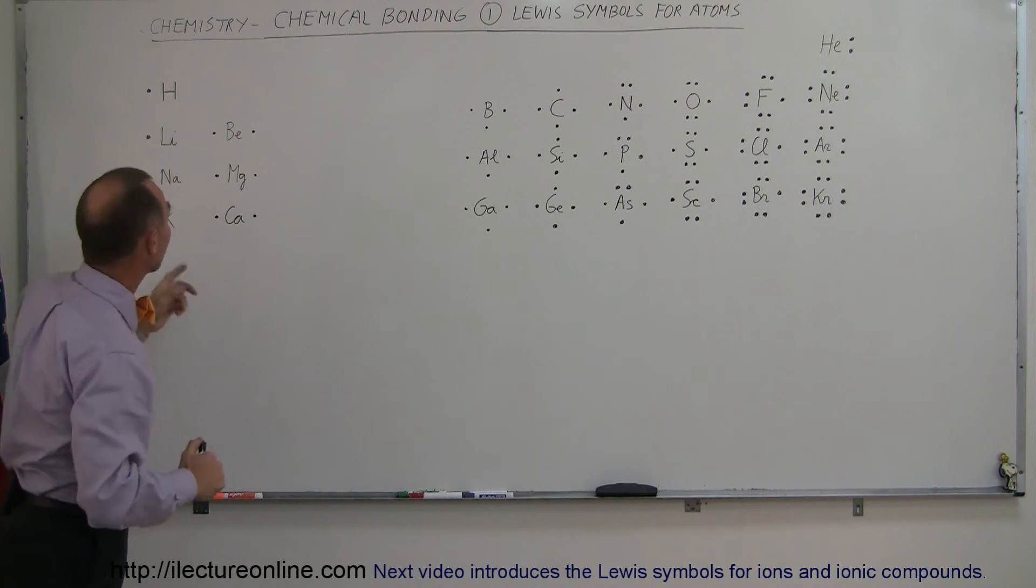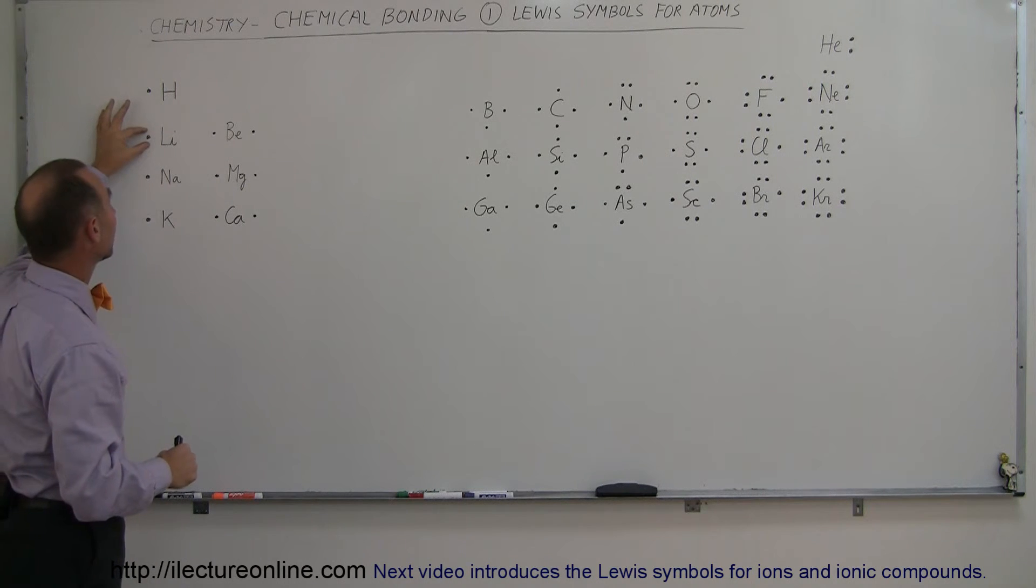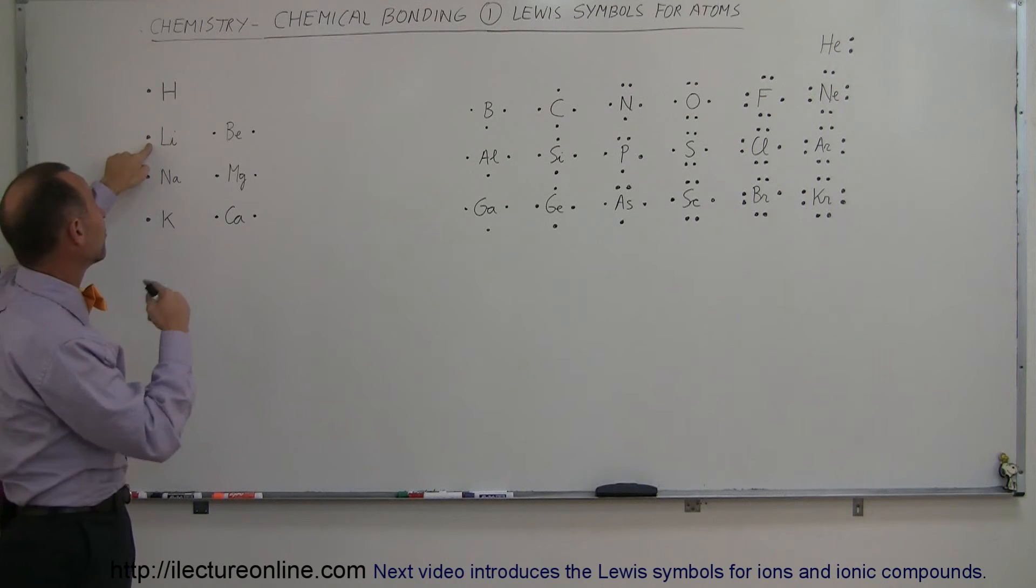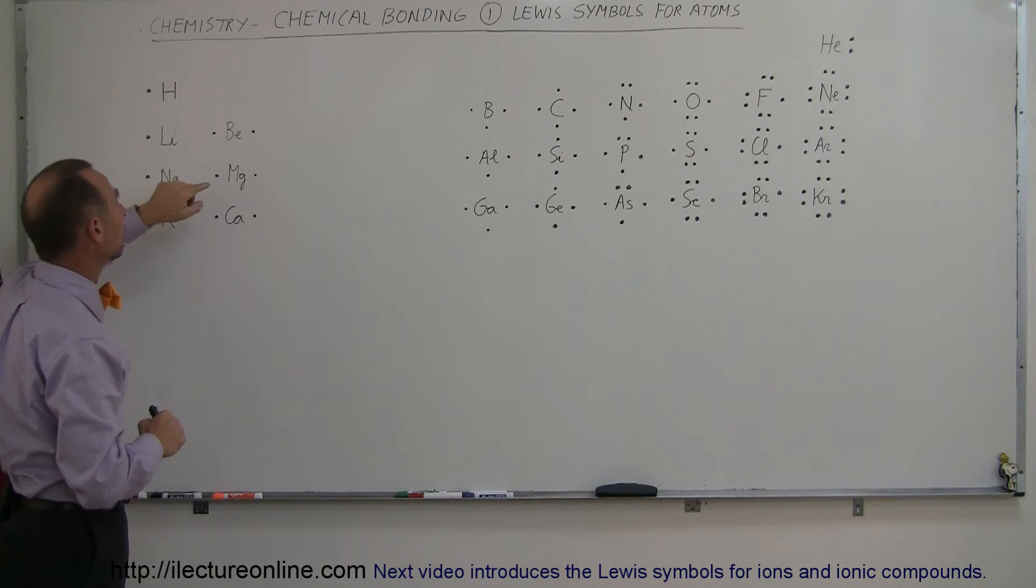For lithium, we know lithium has three electrons but we ignore the inner two. We only indicate the one in the second energy level. So this is the one, this is the electron that's going to be involved in bonding with other atoms, not the two on the innermost energy level.